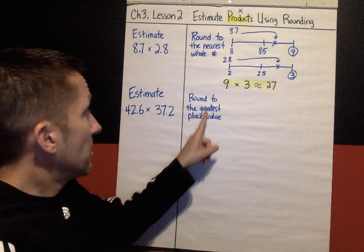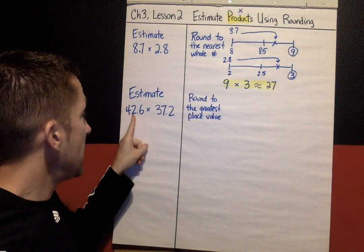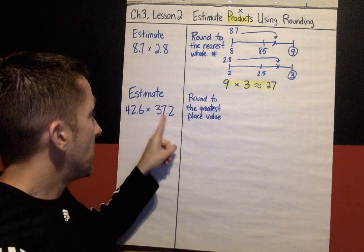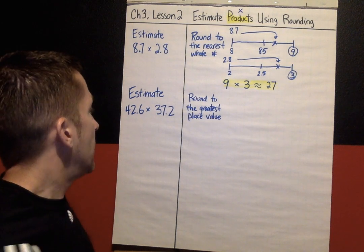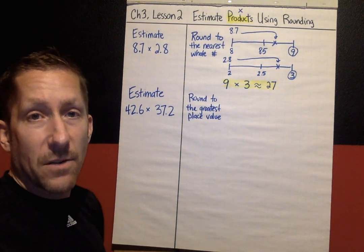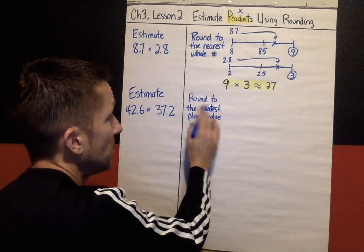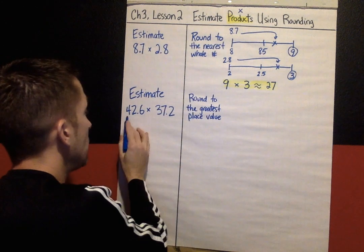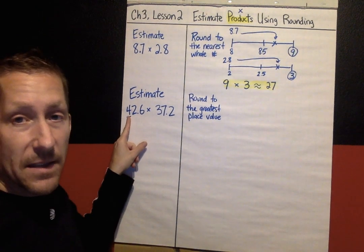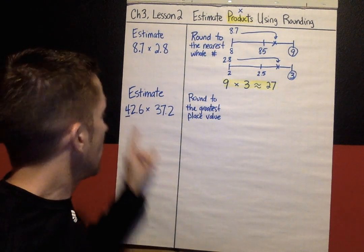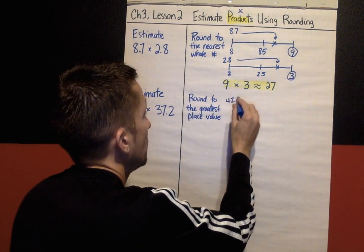For this strategy, instead of rounding to the nearest whole number — which would give 43 and 38 — those aren't numbers I can easily estimate in my head. When you're estimating, you're shooting for something quick and close that you can do without a calculator. So for rounding to the greatest place value, I'm going to the greatest place value of 42.6, which is in the tens, and I'm going to round to the nearest ten to make it easier.